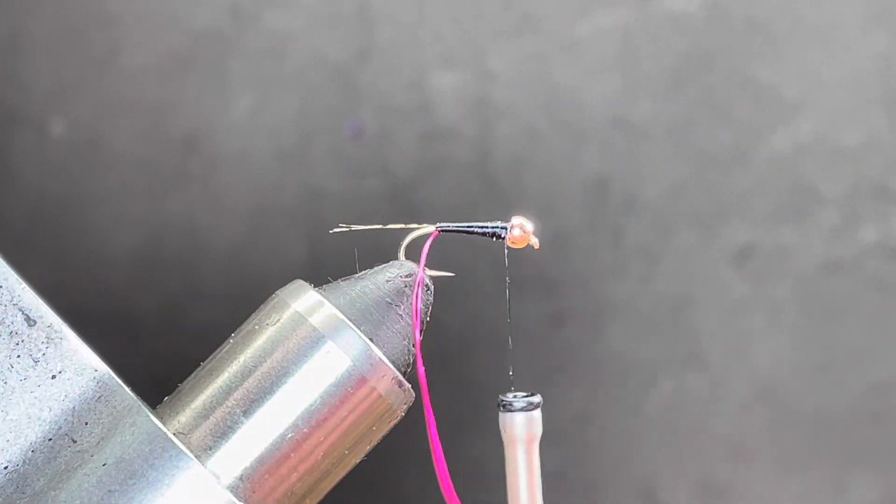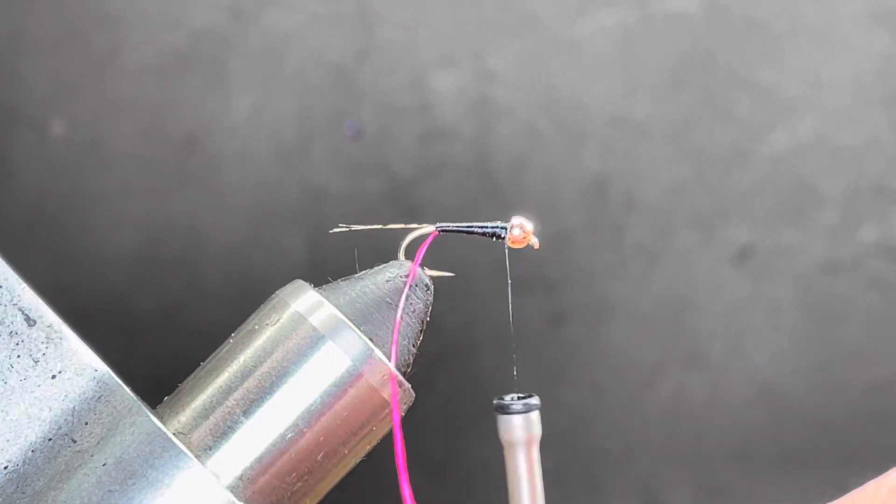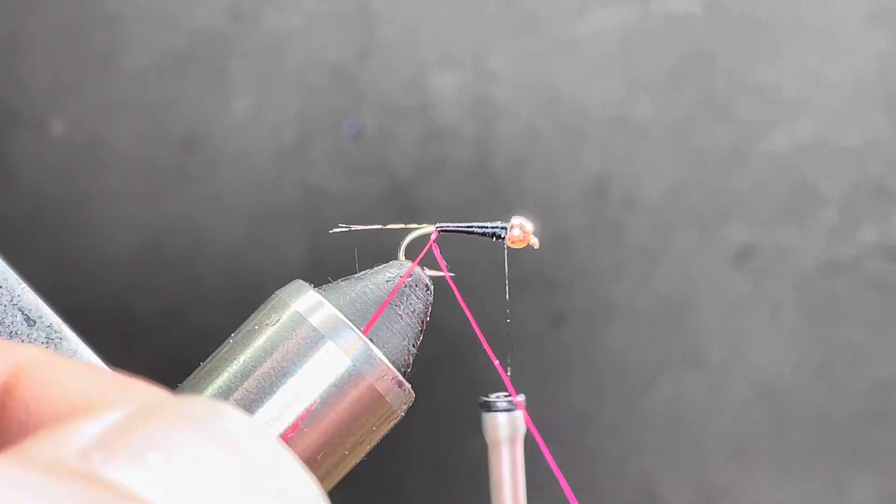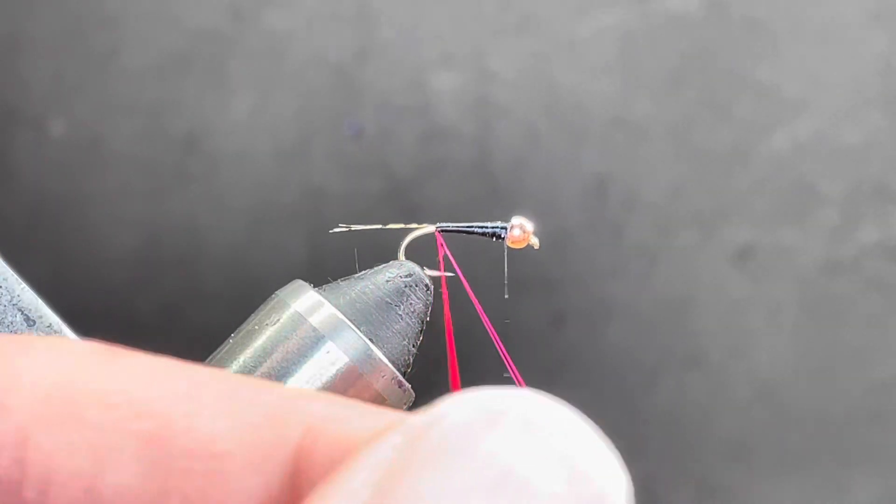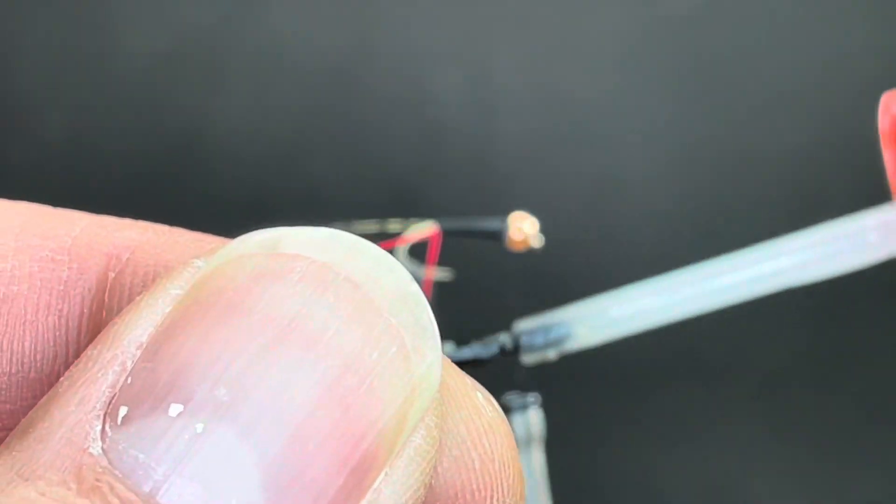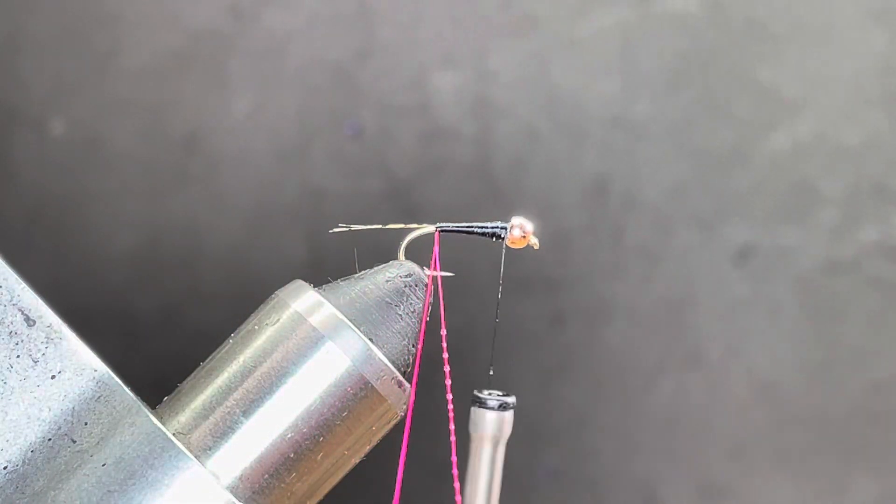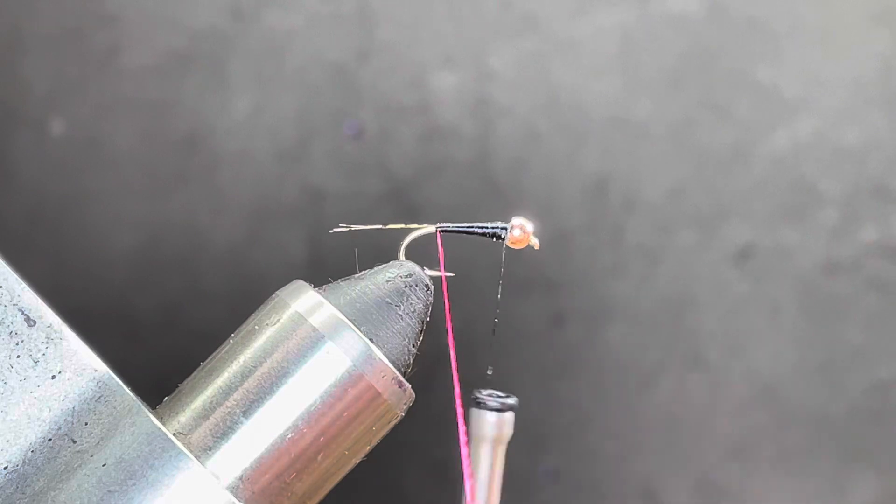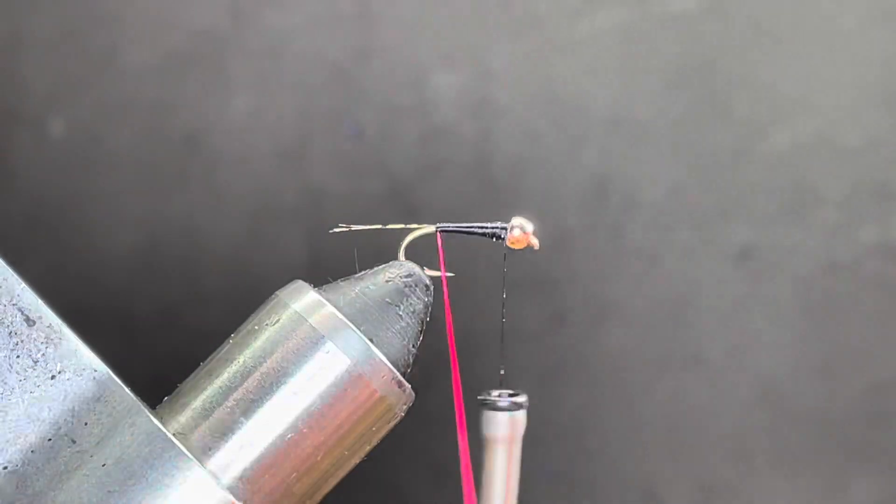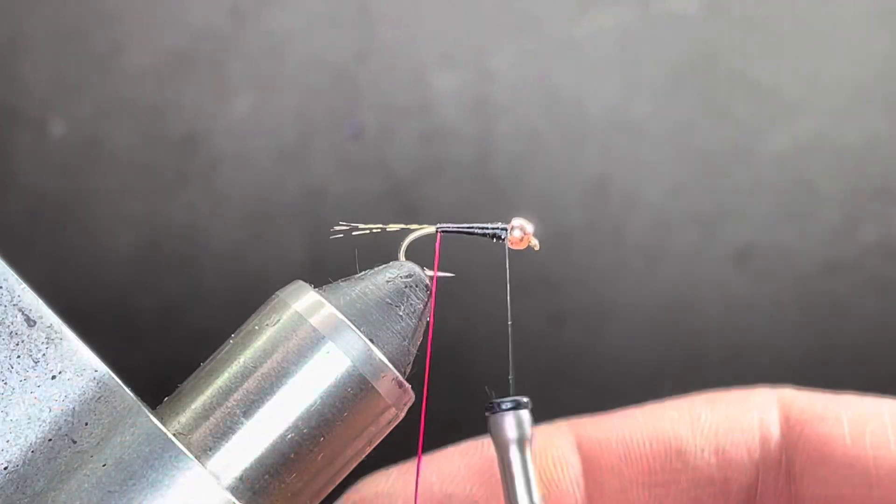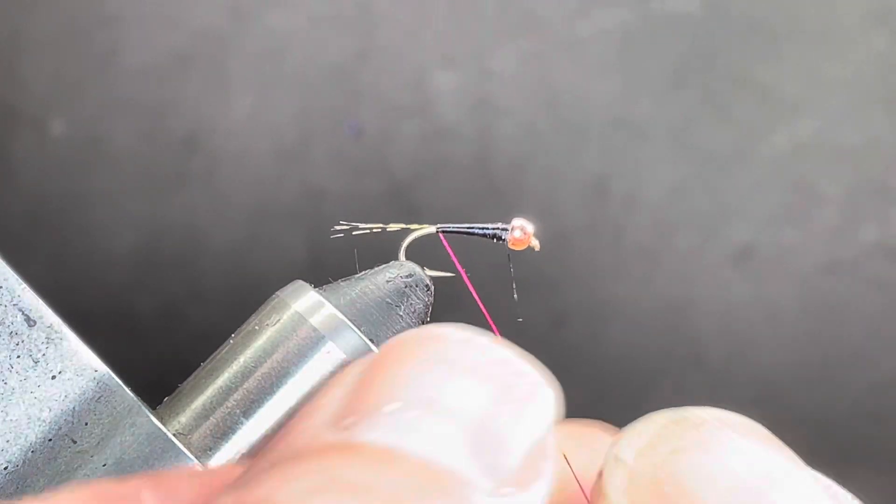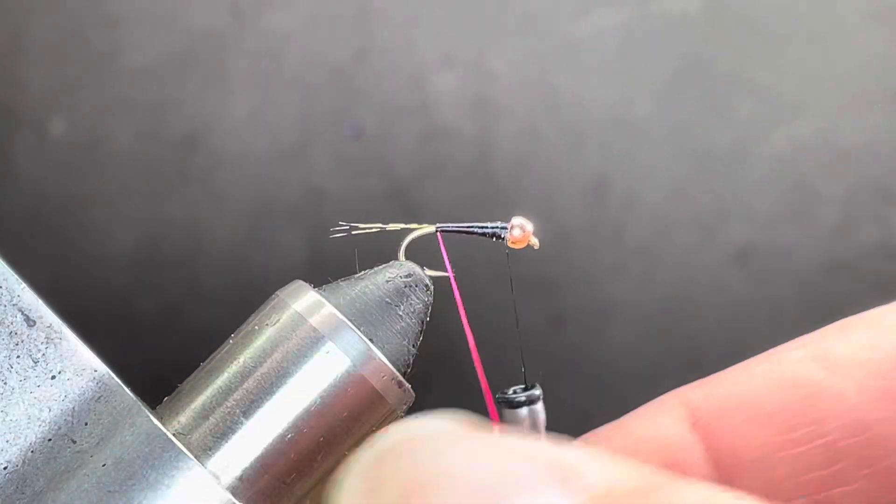So, just to keep this together. Since it's thread, I think the original pattern called for uni stretch. But I don't have any hot pink uni stretch. So, I'm just going to superglue one side of the thread. I'll put the two pieces together and start to twist them. Take my finger and pull all that superglue through. Wind that pretty tight.